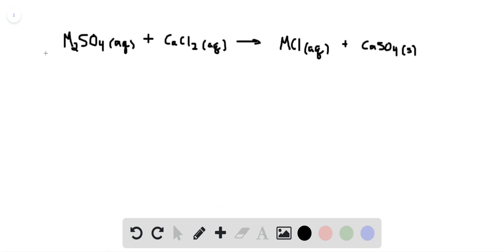So I've written out what that equation would look like. M2SO4 mixed with excess calcium chloride to form calcium sulfate, the precipitate, and then the remaining compound must be MCl because it takes the cation from M2SO4 and the anion from calcium chloride.